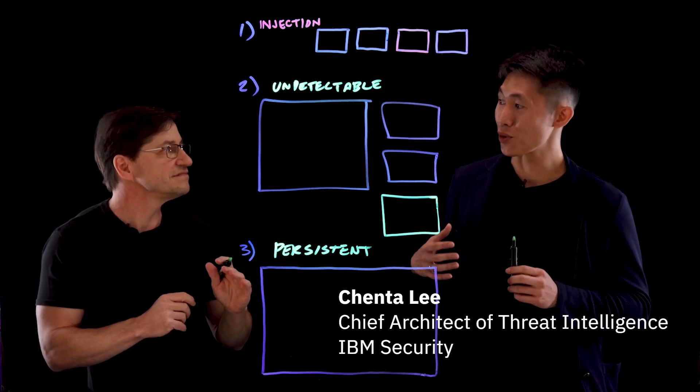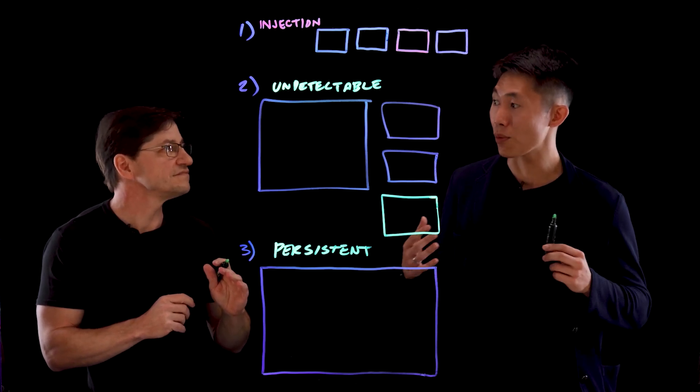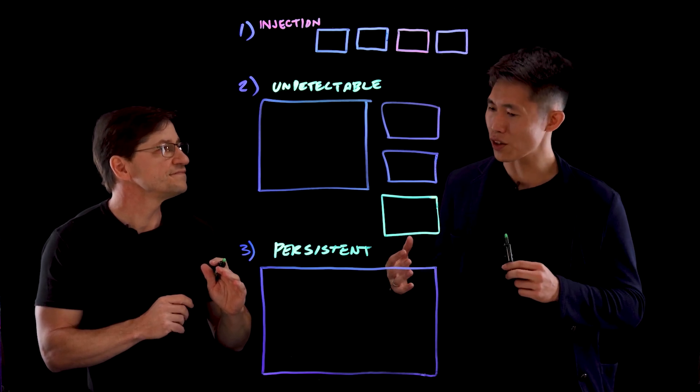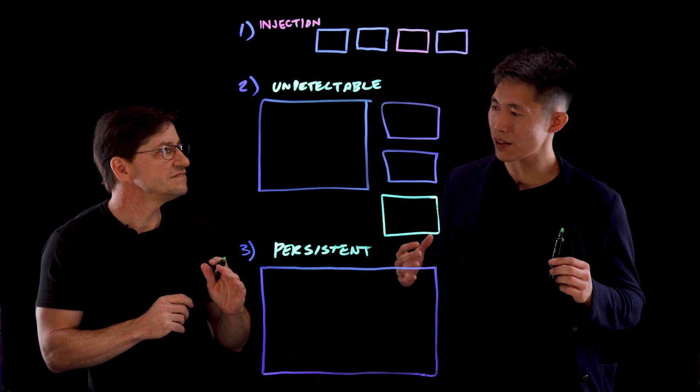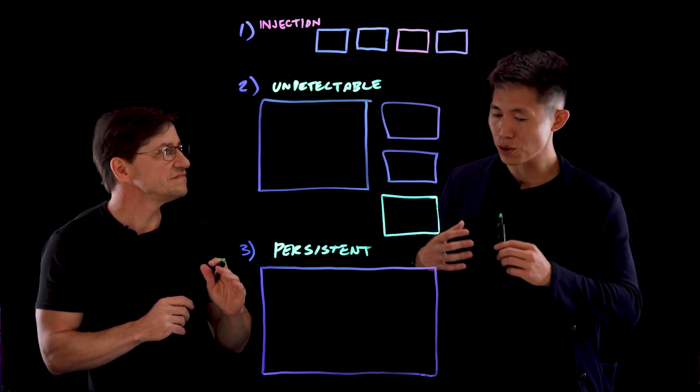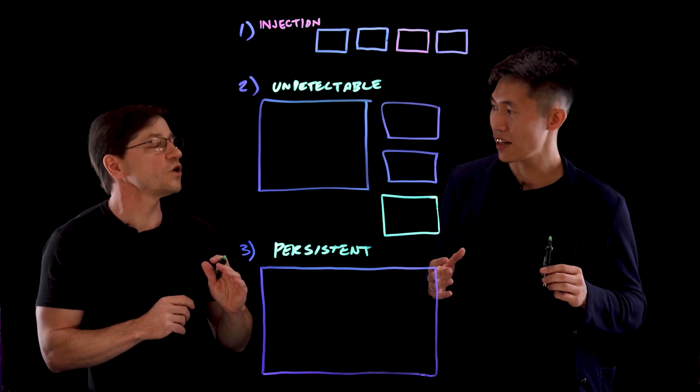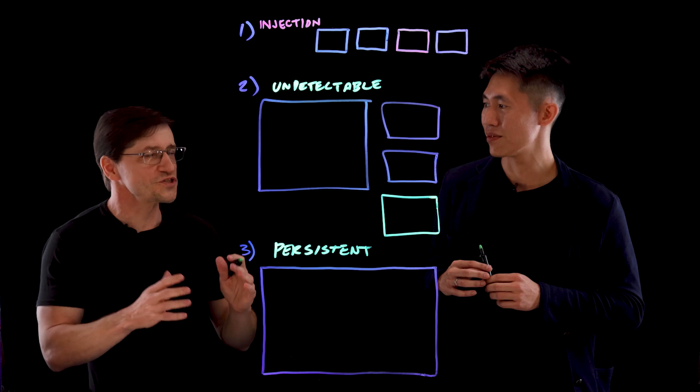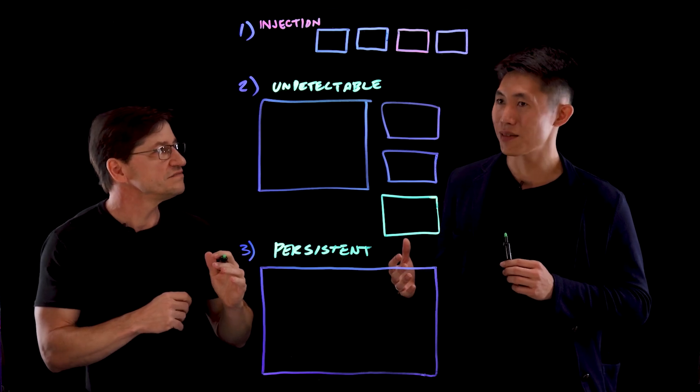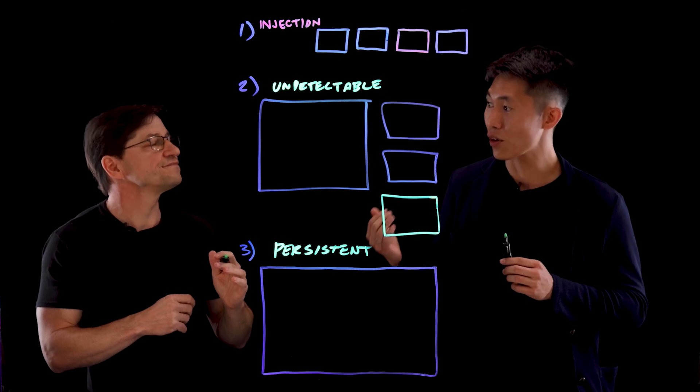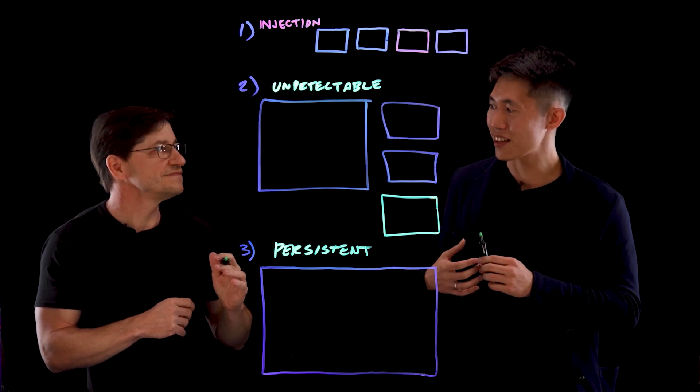So first of all, in X-Force, we always look for new attack scenarios to protect our client. And especially, we are going to integrate, utilize LLM in our own product. So I really need to understand, what is the new threat model? What is the new attack surface, if any? So I start looking into LLM and see, is there a way I can trap it into a false reality I create? And in this false reality, I can make sure this LLM follow any instruction I provided, and it will bypass any existing rules or content policy.